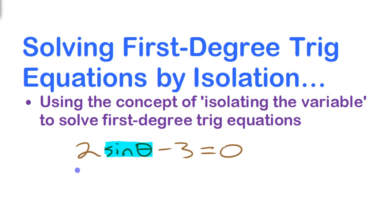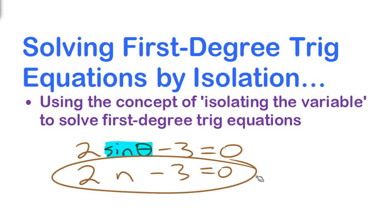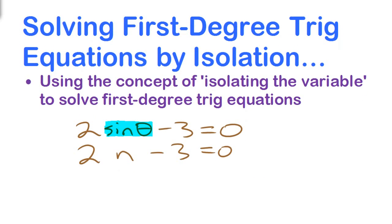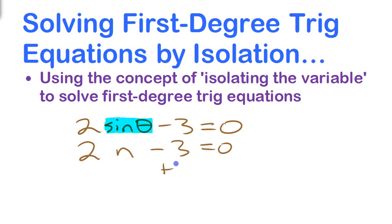Just think of this: what would you do to solve this if instead of 2 sine theta minus 3, it said 2n minus 3? How would you solve that equation? Well, you'd likely use ideas like adding 3 to both sides, moving the 3 to the other side, and then dividing both sides by 2. So you need to bring all those equation-solving skills forward when working with these trig functions.